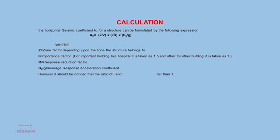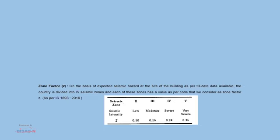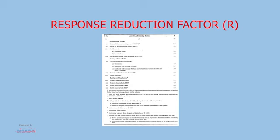The horizontal seismic coefficient AH is formulated as AH = (Z/2) × (I/R) × (SA/G), where Z is the zone factor depending upon which zone the structure belongs to, I is the importance factor as per IS 1893:2016 clause 7.2.3 table 8, and R is the response reduction factor from clause 7.2.6 table 9. The response reduction factor R is higher for ductile buildings and smaller for brittle ones, allowing some damage to make buildings economical.